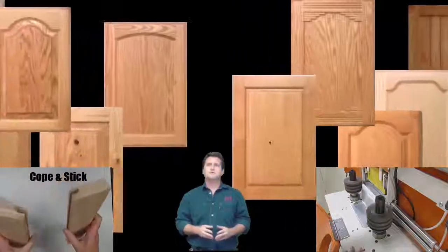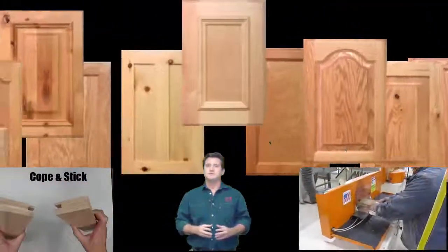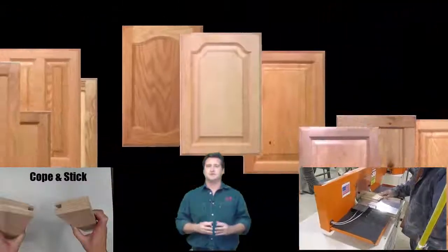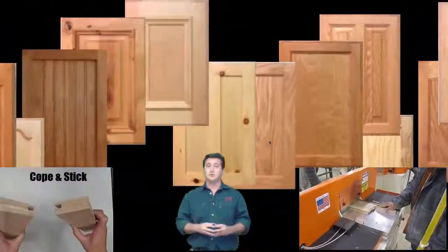At lower left, we show the Cope and Stick joint and how this joint is assembled. At lower right, one of our coping machines is shown actually machining this Cope and Stick joint on the cabinet door's rails.